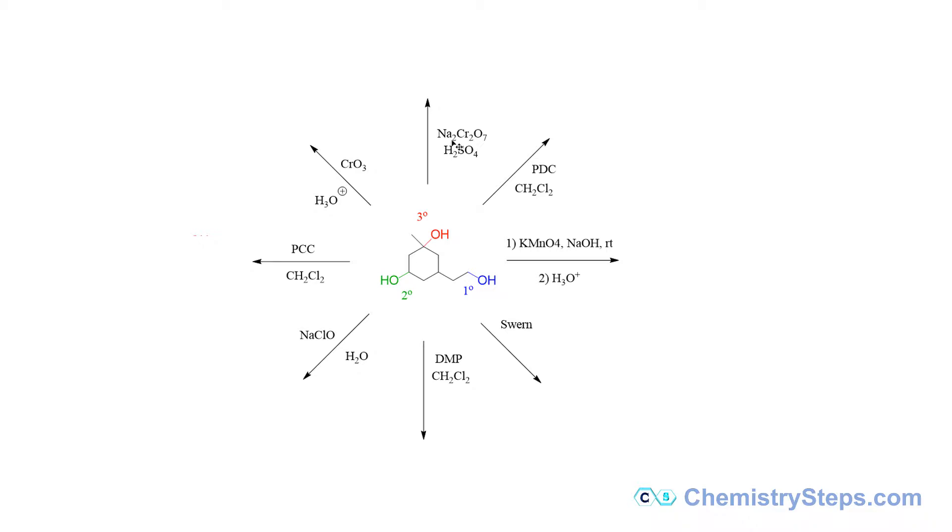So let's start with the first reagent, sodium dichromate, that is pointing to the top. Sodium dichromate in acidic conditions is a very strong oxidizing agent. So what you want to remember about this is that they're going to oxidize any primary or secondary alcohol all the way to carboxylic acid or ketone, or whatever is possible given the molecule.